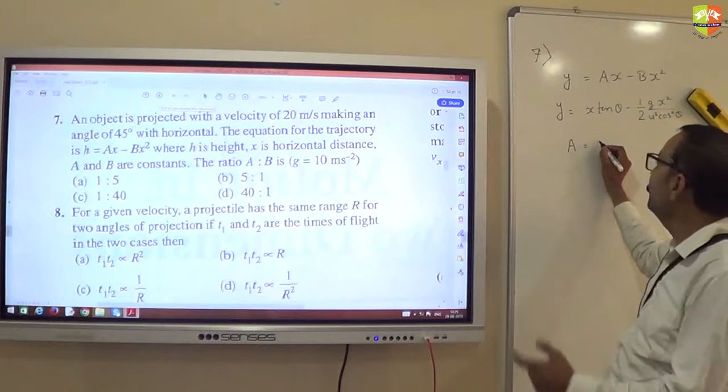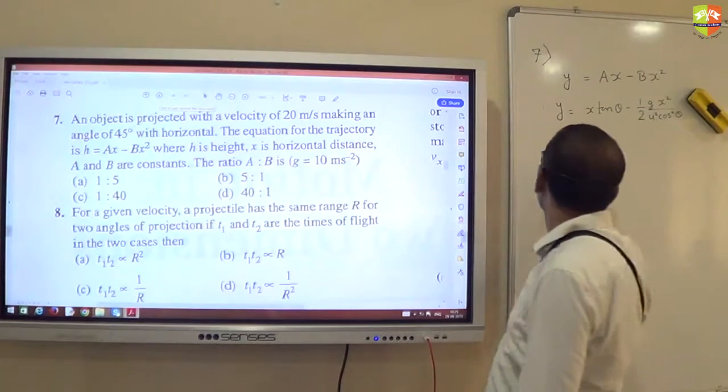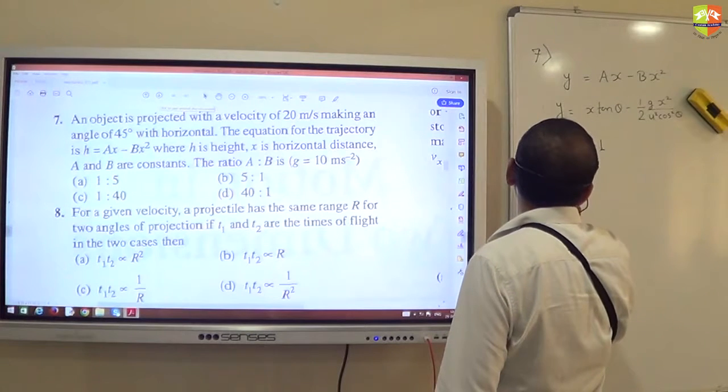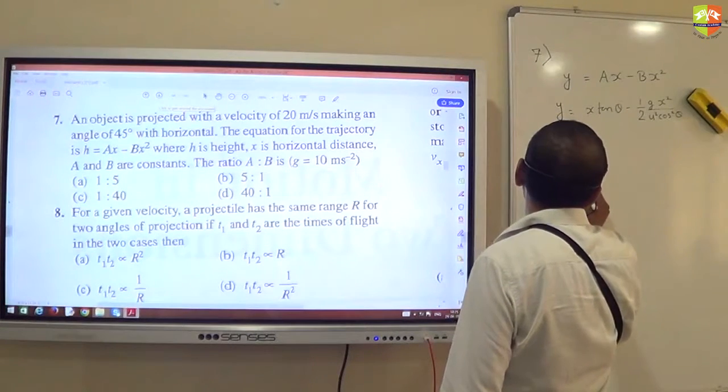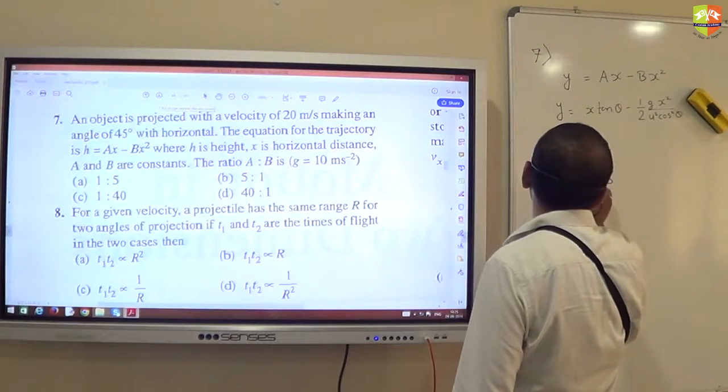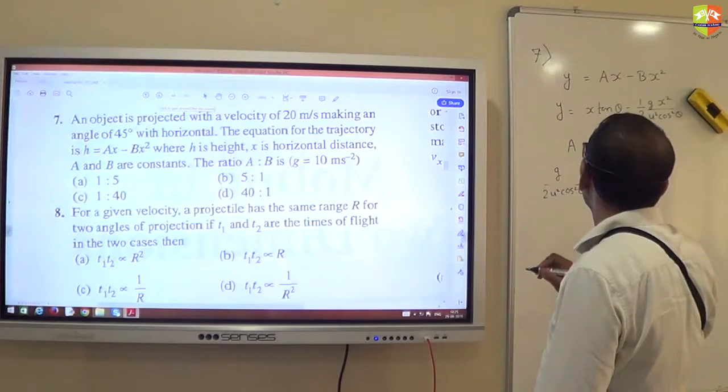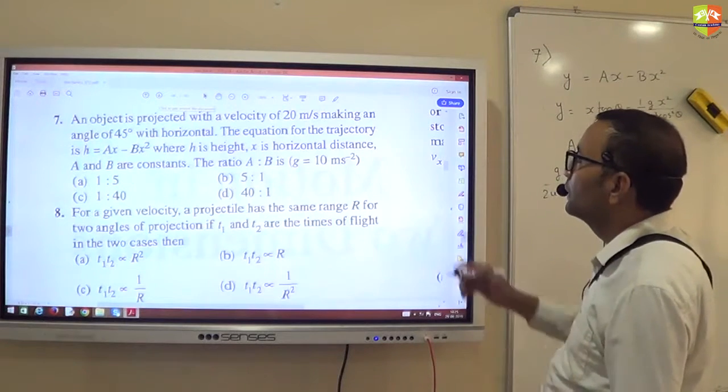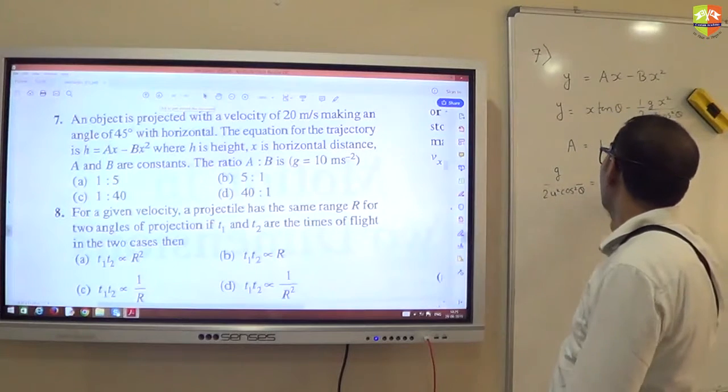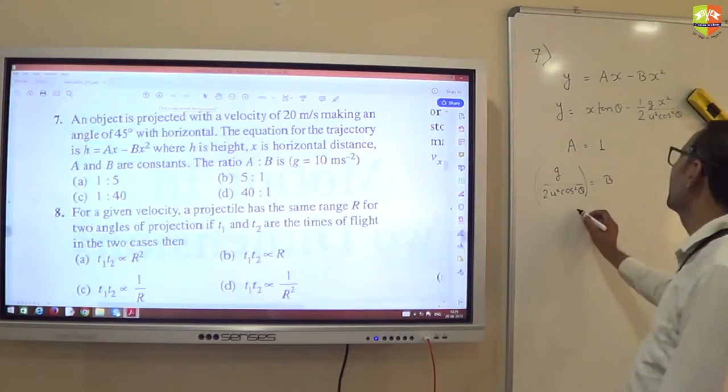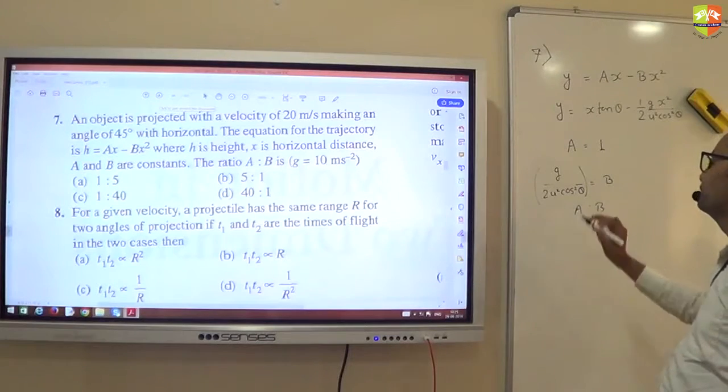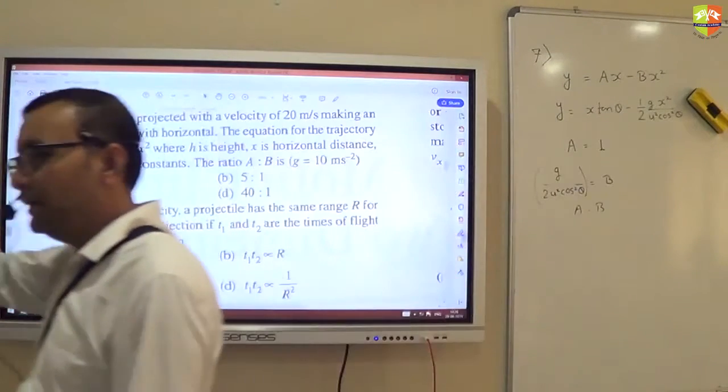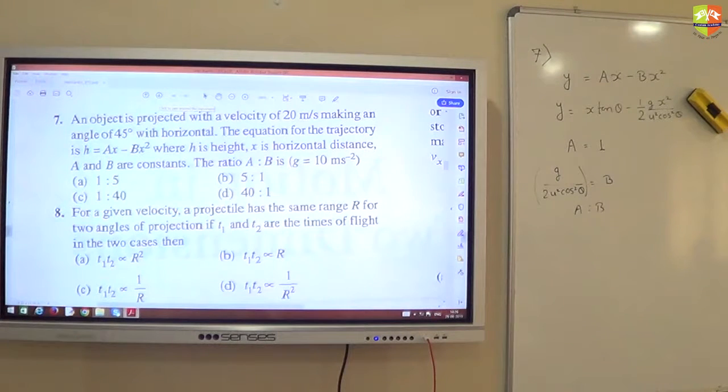A is tanθ. Tan of 45° is 1, so A is 1. And g divided by 2u²cos²θ is B. So u is 20. You can substitute the values of g, u, and θ here and you get A is to B. I am comparing the equation of projectile with the given equation. What else will come in your mind when you look at it? This is the equation of projectile only.